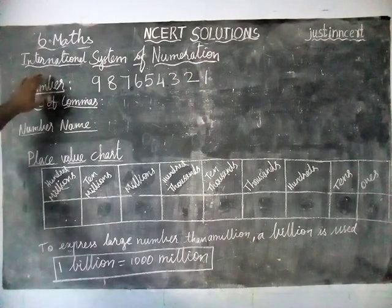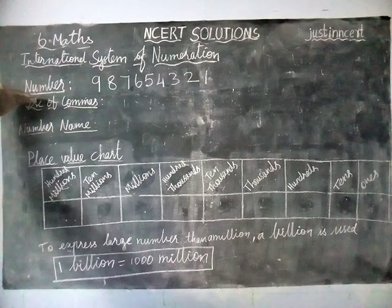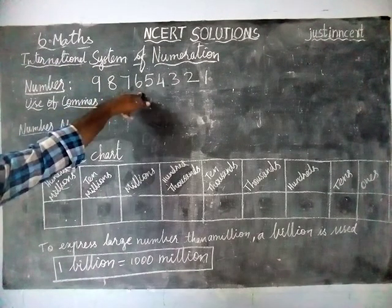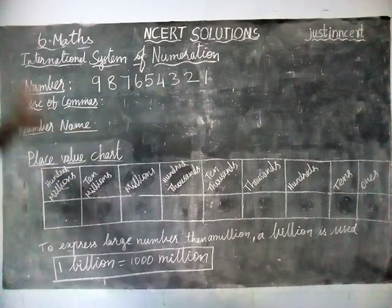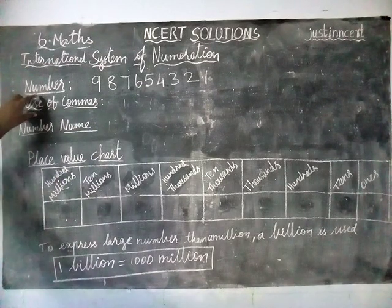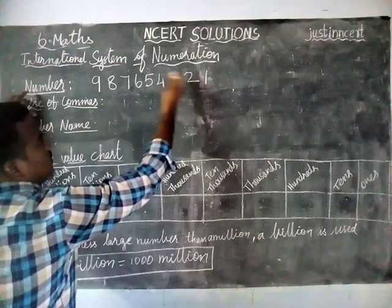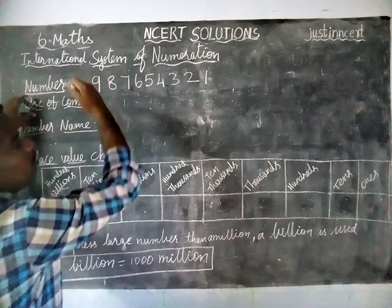Now we are going to see the International System of Numeration. We have taken the number 987654321, and we will look at how to use commas. In the Indian System of Numeration, we make the first three digits from the right-hand side, and after that, each and every two digits.